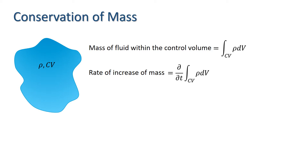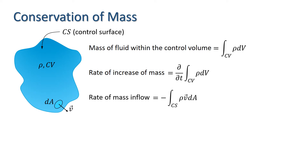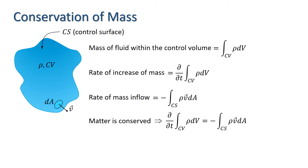Let's consider next the net rate of mass inflow to the control volume through the control surface. Let Cs denote the control surface and let v be the velocity perpendicular to the control surface. Then the rate of mass inflow will be minus the integral over Cs of rho v dA. Note the minus sign appears here because the vector v is pointing outward from the control surface. We know that matter is conserved, and so the rate at which mass increases in Cv must equal the rate at which mass is flowing into Cv through Cs. Thus, d/dt of the integral over Cv of rho dv equals minus the integral over Cs of rho v dA.